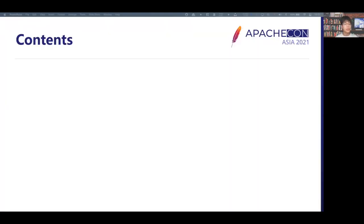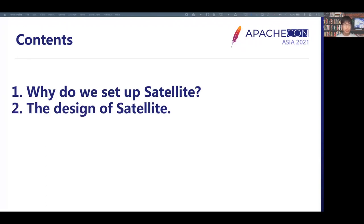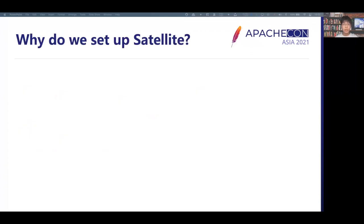For this presentation, there are four parts. Firstly, we will talk about the reason why we set up this project in the SkyWalking ecosystem. In the second part, I will introduce the design of the satellite. In the next part, I would show how the satellite helps SkyWalking work better with some demos. Finally, I would introduce some future plans for the satellite. Let's start the first part: why SkyWalking Satellite.